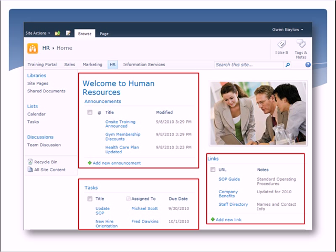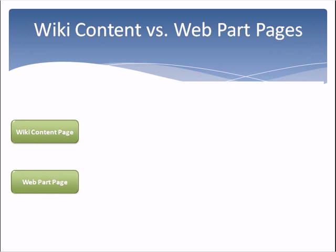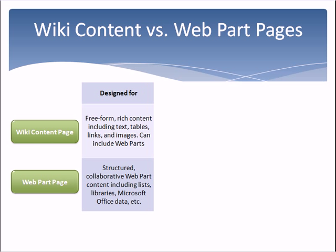Here's a summary of the differences. Wiki content pages are designed for freeform rich content, including text, tables, links, and images, and can include web parts. Web part pages are designed for structured collaborative web part content, including lists, libraries, Microsoft Office data, etc.